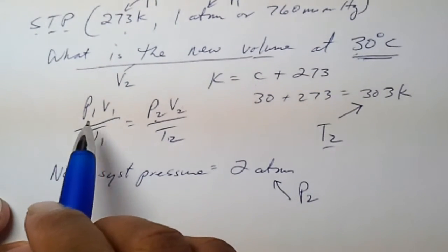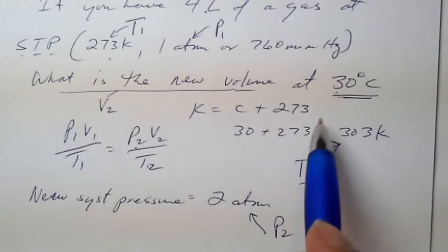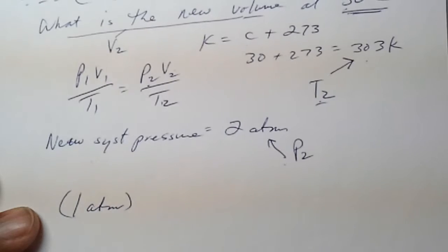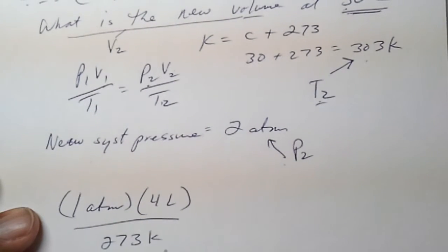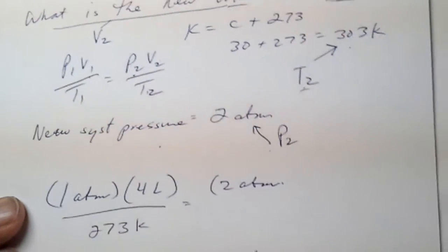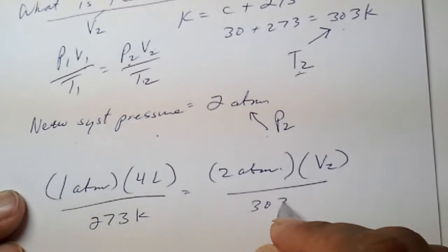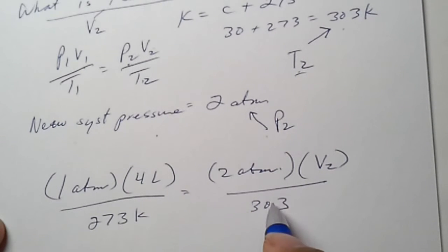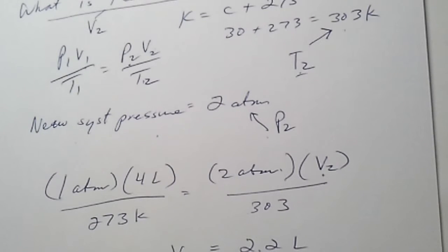We have P1, V1, T1. We have V2 is what we want. We have T2, and we have P2. So we simply plug those in, one atmosphere times four liters, divided by 273 degrees Kelvin, equals P2, two atmospheres, times V2 is what we want. And our T2 is 303. We multiply this out, and then isolate our V2. We find that our new volume is 2.2.